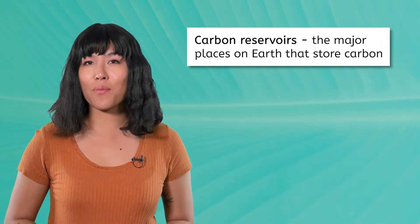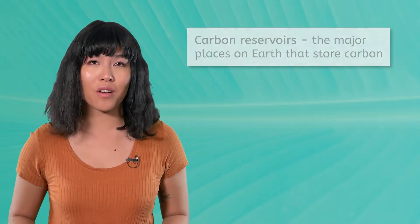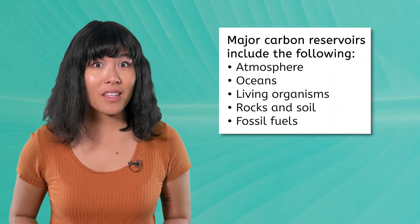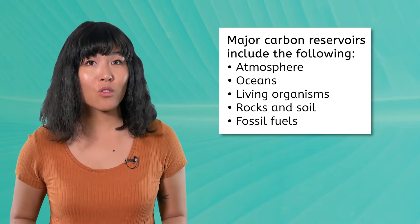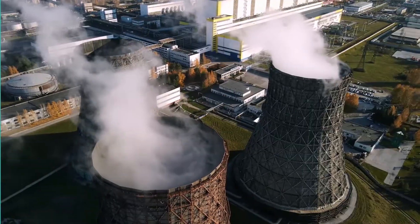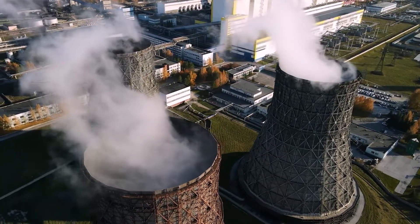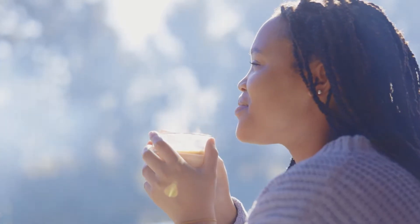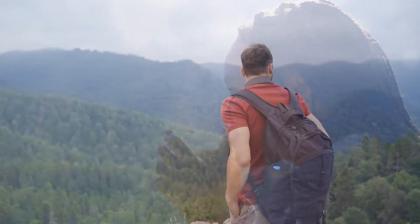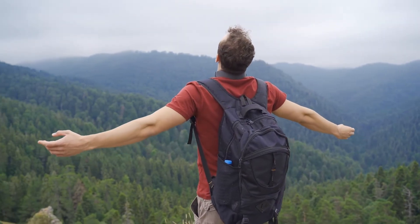The major places we find carbon are called carbon reservoirs. These include the atmosphere, oceans, living things like plants and vegetation, and rocks, soil, and fossil fuels in the ground. But how does carbon move between these reservoirs? How does the oxygen we breathe in turn into the carbon dioxide we breathe out? And does that carbon dioxide just accumulate in the atmosphere? Let's get to the bottom of these questions as we explore the steps of the carbon cycle.